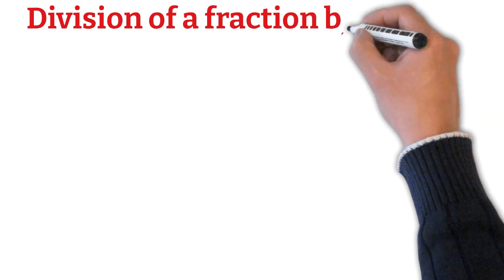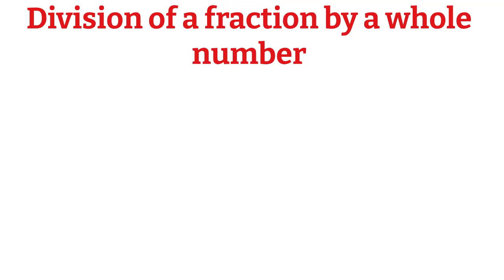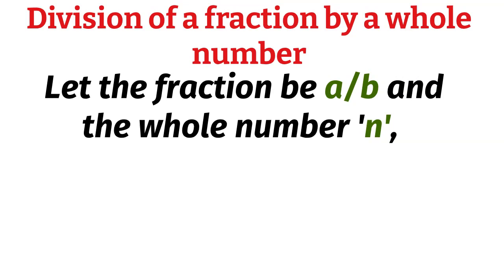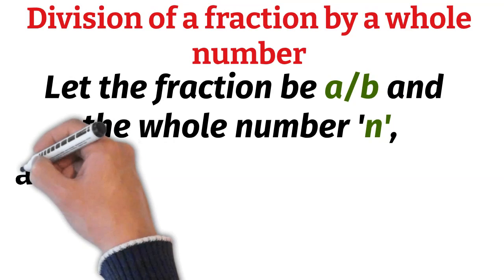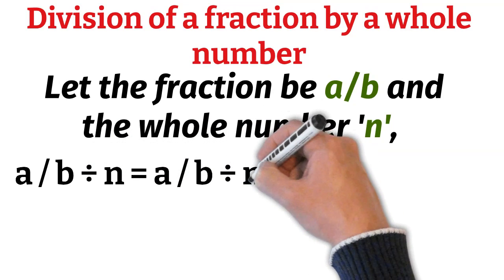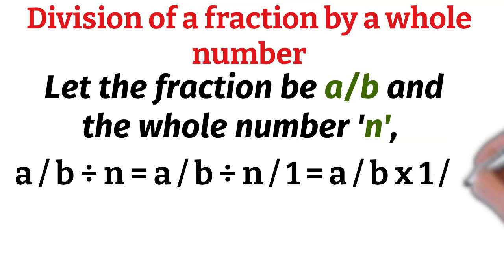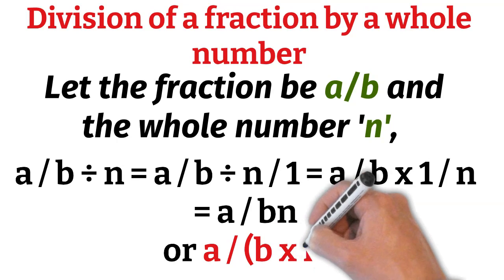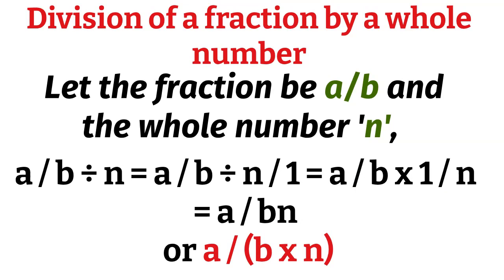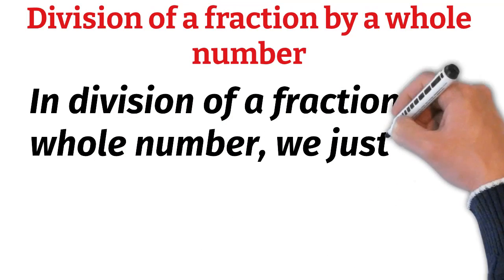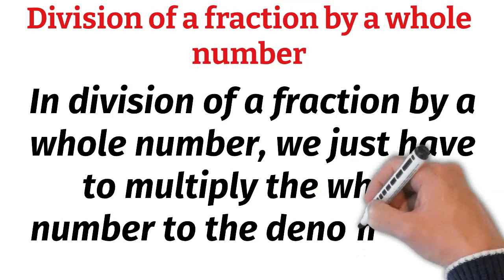Division of a fraction by a whole number: let the given fraction be a/b and the whole number be n. Then a/b ÷ n = a/b ÷ n/1 = a/b × 1/n = a/(b×n). Thus, in division of a fraction by a whole number, we just have to multiply the whole number to the denominator.